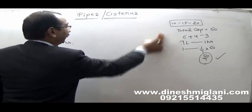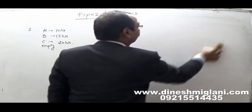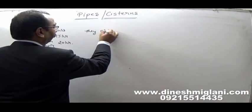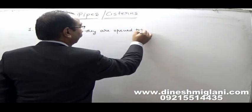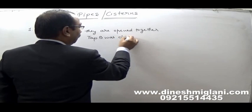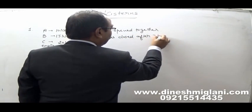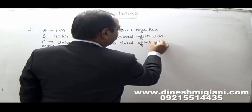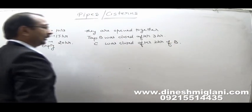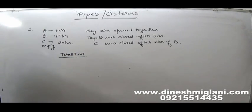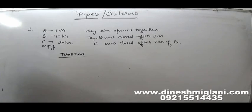The information is the same: A can fill the tank in 10 hours, B can fill in 15 hours, and C can empty the tank in 20 hours. The question is: they are all opened together, but tap B was closed after 3 hours, and tap C was closed after 2 more hours. What is the total time in which the tank was filled?